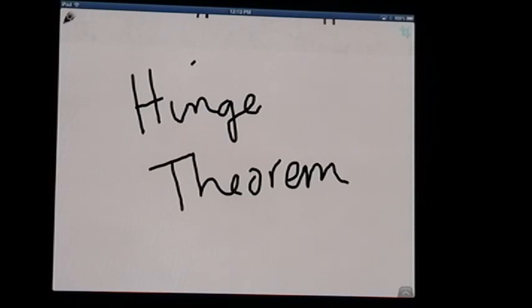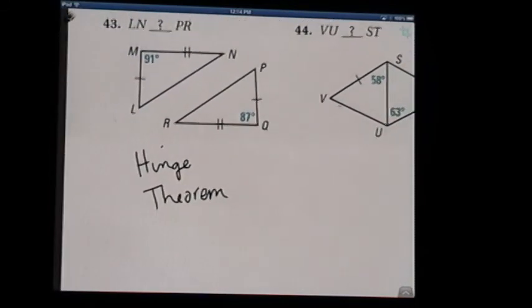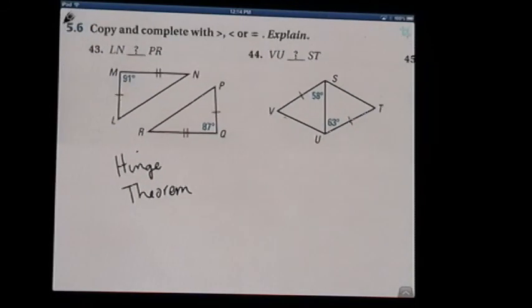Okay, this video is on the hinge theorem, and I'm using the back of your book once again, on page 905. Looking at 5.6, numbers 43 and following. And the hinge theorem says that if you have two triangles with congruent sides, as you open up the angle, the included angle, that would be the angle between the two sides.